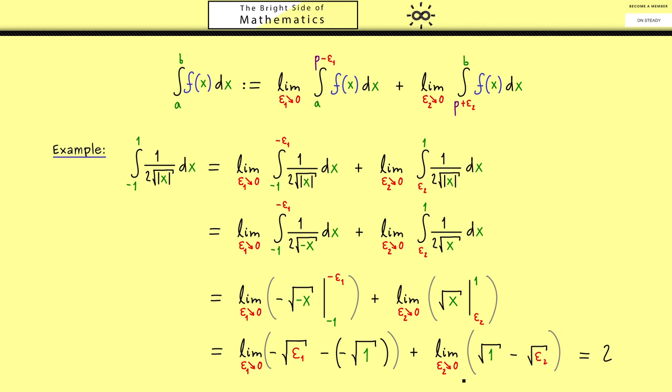So you see we can just use that the square root is a continuous function, so the square root of 0 is 0. Hence you see this here is a nice example where the two areas here exist.